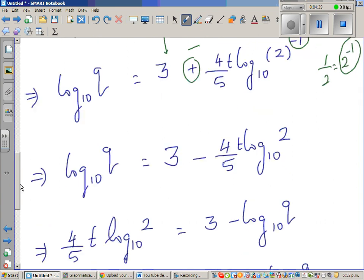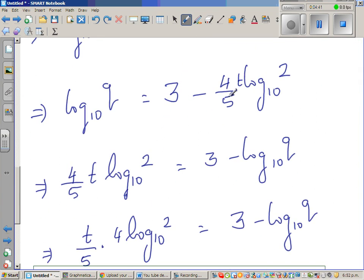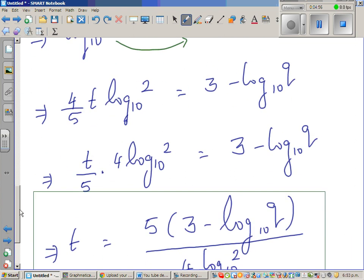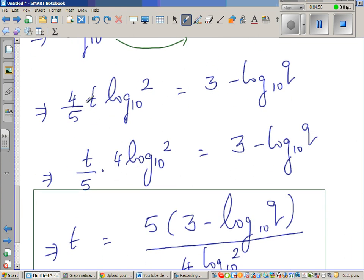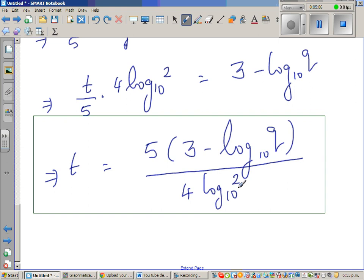So the rest is simple algebraic manipulation. Now I'm making this the subject. So I'm bringing this to this side. And I'm taking this to this side. So this is 4 fifth t log 2 to the base 10 is 3 minus log q to the base 10. And finally, this can be written as t over 5 times 4. This and this I've multiplied. So this is simple. And finally, this is the answer. And that's what we got. And this is what is required.